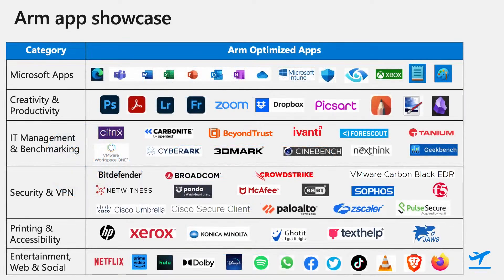This slide showcases the breadth of applications optimized to run on ARM devices — in most cases fully native, taking advantage of the power and efficiency ARM devices offer. Microsoft is leading the way by porting all first-party applications, including marquee apps like Microsoft Edge, Microsoft Teams, and Microsoft 365 apps such as Excel, Word, PowerPoint, OneNote, and OneDrive. Commercial applications like Intune, Microsoft Defender for Endpoint, and most recently Endpoint Data Loss Prevention also support ARM devices. All inbox applications including Notepad, Paint, and Xbox run natively as well.